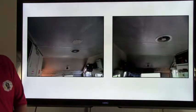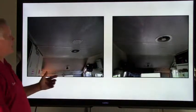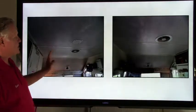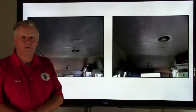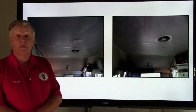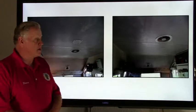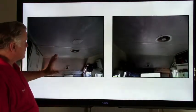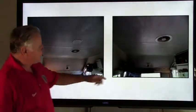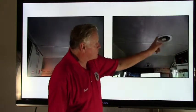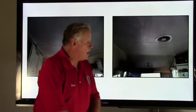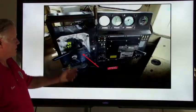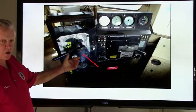Next we're going to talk about air conditioning and cab vents. This particular locomotive was not equipped with air conditioning, but it does have cab vents — one on the conductor side and one on the engineer's side. They have to be in working order.